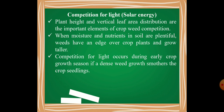Now, competition for light or solar energy. Plant height and vertical leaf area distribution are the important elements of crop weed competition. When moisture and nutrients in the soil are plentiful, weeds have an edge over crop plants and grow taller. Competition for light occurs during the early crop growth season if dense weed growth smothers the crop seedlings, competitively suppressing them.